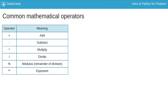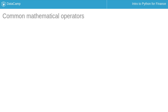You can use Python to perform common mathematical operations, such as addition and multiplication. Some of these operators are shown on the slide here. For example, if you want to add 8 to 4, you would use the addition operator, as shown here, to obtain a result of 12.